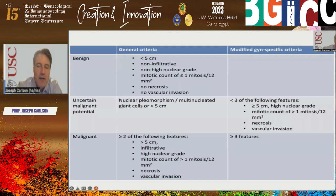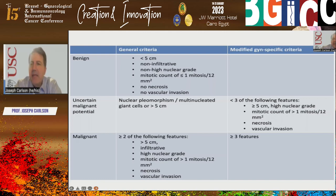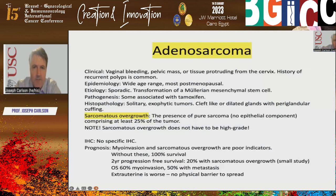Here are the criteria for PEComa malignancy — two different sets. We evaluate nuclear grade, mitotic count, presence or absence of necrosis, vascular invasion, and infiltrative margin. I personally prefer the GYN-specific criteria, but both generally agree. It's important to make the diagnosis because mTOR inhibitors are considered in therapy. These are divided into benign, malignant, and uncertain malignant potential — they are difficult tumors.